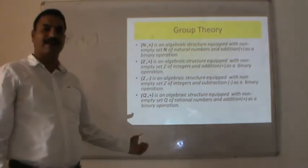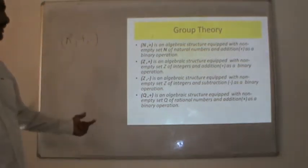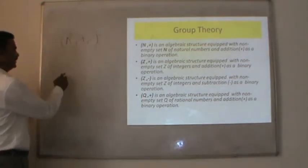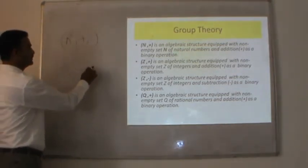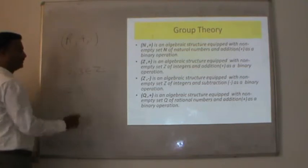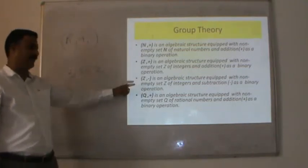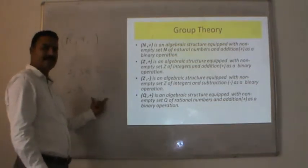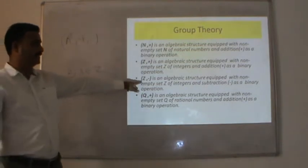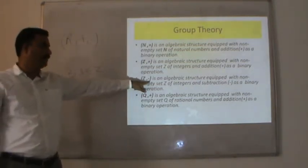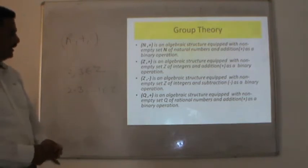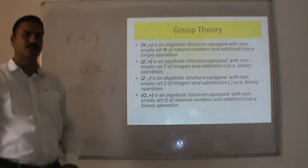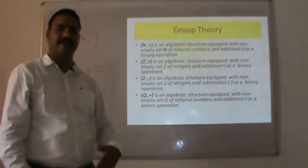Similarly, (Z, −) is also an algebraic structure because subtraction is also binary on Z — if we choose two integers like 2 and 3, then 2 − 3 = −1, which again belongs to Z. Lastly, (Q, +) where Q stands for rational numbers, and addition is a binary operation over Q because the sum of two rational numbers is again another rational number.